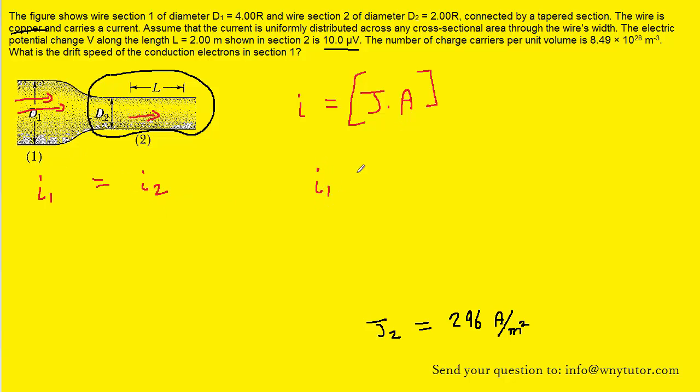We will come over here and do that. We will write I1 equals I2, and then for I1 we are going to have its current density multiplied by its cross sectional area. Then we will set that equal to the current density of section 2 multiplied by its cross sectional area.